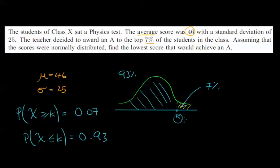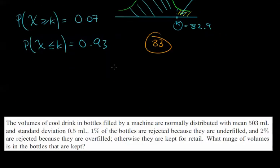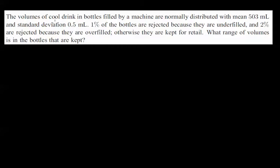The calculator gives 82.9. Since you can't score 82.9 on the test, we round to the nearest whole number: 83. So scoring 83 marks or above earns an A, and this ensures approximately 7% of students in the class receive an A.